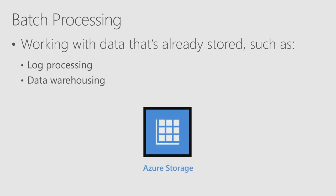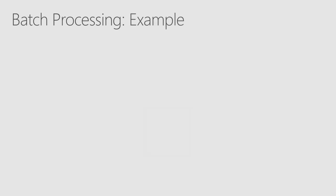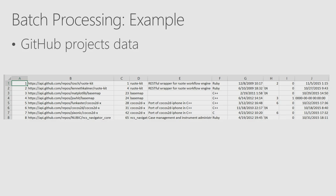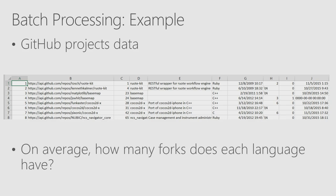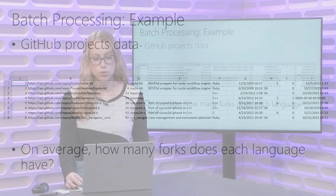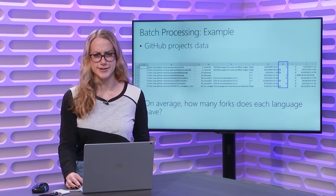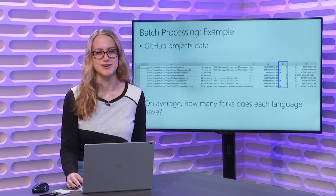We can also do data warehousing, which means taking in data from a variety of different sources, performing a large-scale analysis on it — maybe data all stored in Azure storage — and gaining meaningful insights from it. In the example we're going to look at today, we'll take a look at some GitHub projects data. That data includes the URL of our projects, the author, a description, the language, and things like that. We want to know on average how many forks each language has, represented by column H.